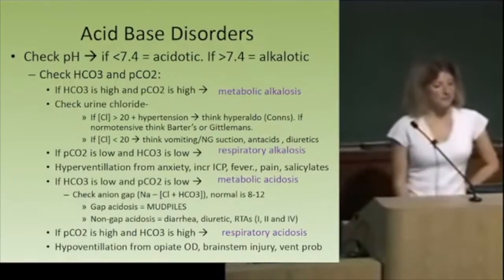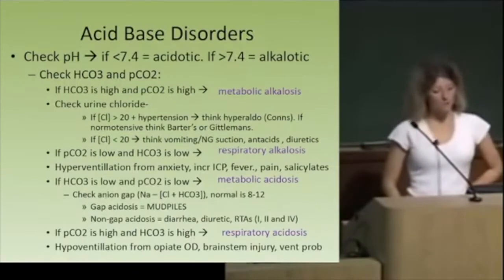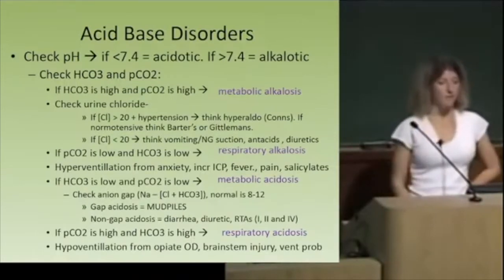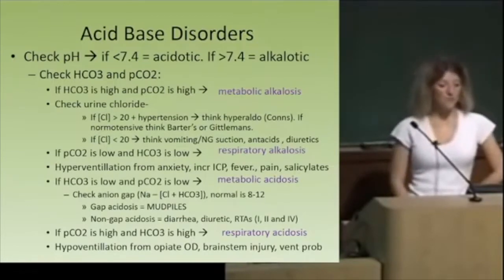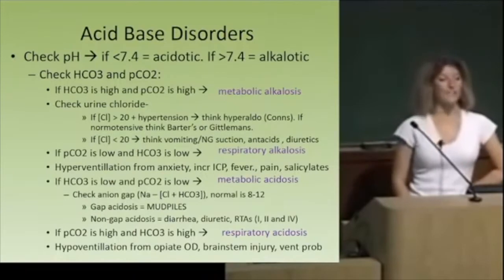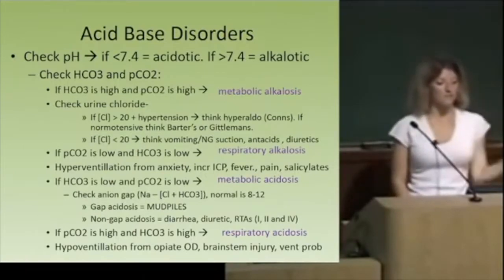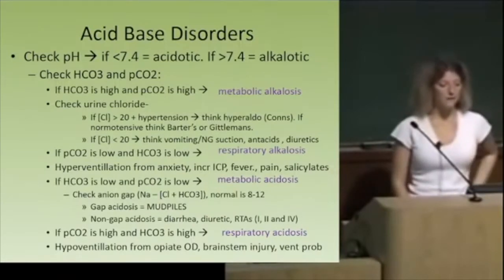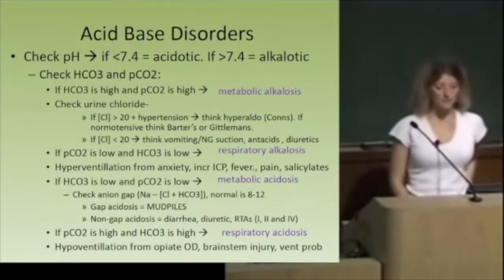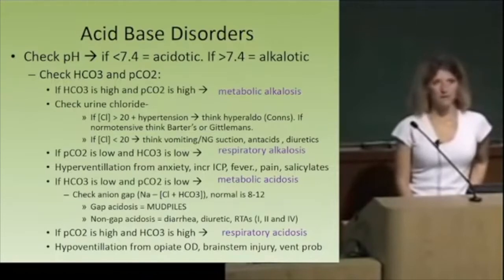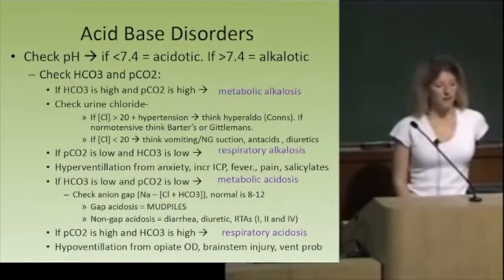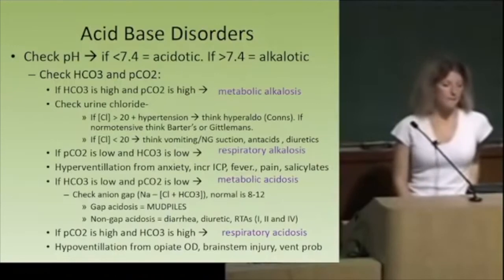If bicarb is low and PCO2 is low, that's describing a metabolic acidosis. The next thing to calculate is the anion gap. Normal is 8 to 12, and if it's elevated, think about the MUDPILES mnemonic. Non-gap metabolic acidosis has fewer causes — diarrhea and diuretic use are the main ones, along with renal tubular acidoses. If PCO2 is high and bicarb is high, that's a respiratory acidosis, with hypoventilation as the overwhelming cause.